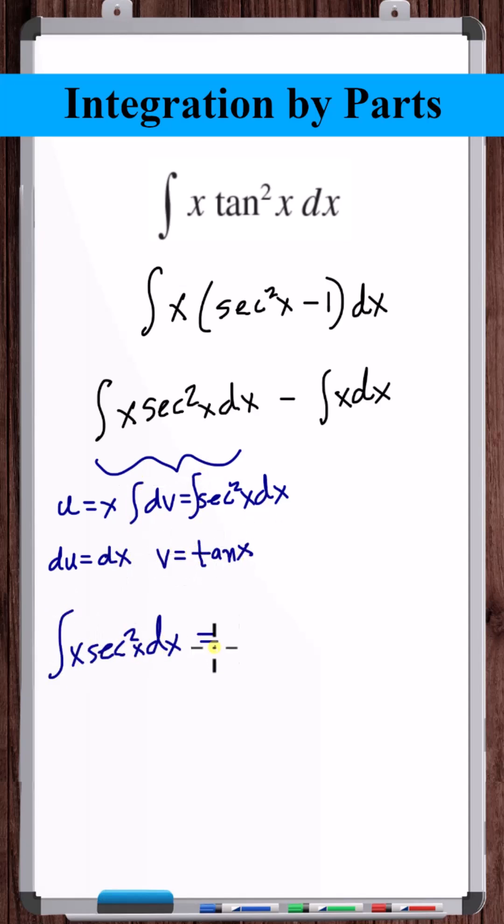So this integral is equal to u times v minus the integral of v du. Checking the trig integral tables, we see that the integral of tangent x dx is natural log of the absolute value of secant x.